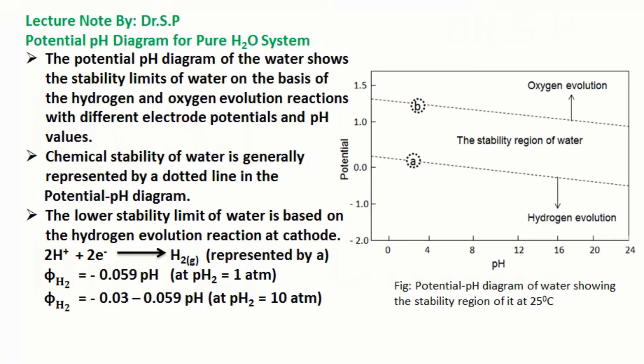Potential pH diagram for pure H2O systems. The potential pH diagram of water shows the stability limits of water on the basis of the hydrogen and oxygen evolution reactions with different electrode potentials and pH values.